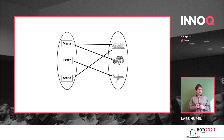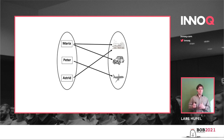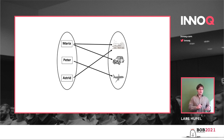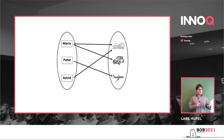I have another example on the slide. We have three people — Maria, Peter, and Astrid — and in the target set we have three means of transportation: trains, cars, and planes. The relation describes which means of transport are taken by each person. Maria, for example, takes the train and the car on her journey. Peter only takes the airplane, and Astrid only takes the train. You can have arbitrary combinations of source and target.